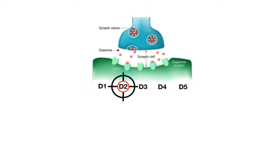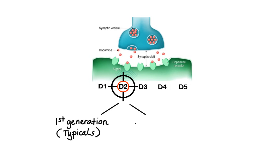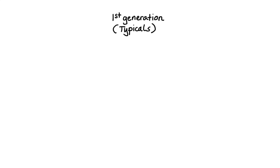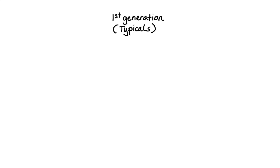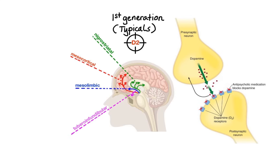Antipsychotics can be grouped into older first-generation agents known as typicals, and newer second-generation agents known as atypicals. The first-generation typical antipsychotics all share the same main therapeutic goal: to block D2 receptors. Furthermore, typical antipsychotics are not selective for any of the four dopamine pathways and thus will block D2 receptors in almost all areas of the brain. This has positive as well as negative consequences.